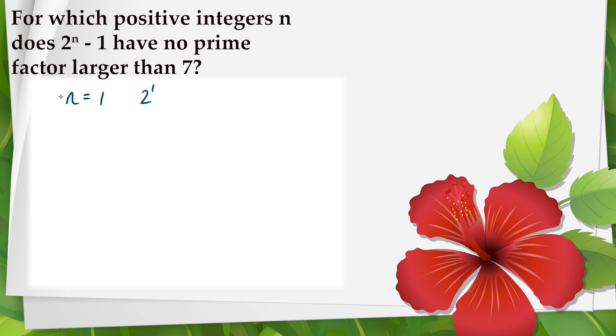When n equals 1, 2 to the n minus 1 is 1, which of course has no prime factor larger than 7. When n equals 2 and 3, again, no prime factor is larger than 7. When n equals 4, we'll get 15, which is 3 times 5, again that works.